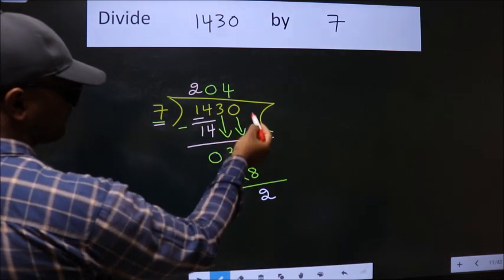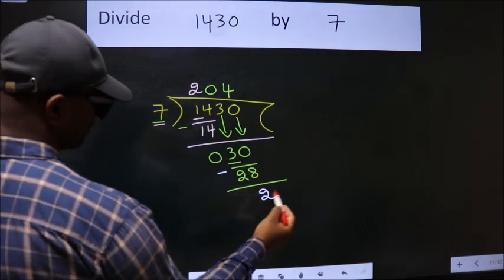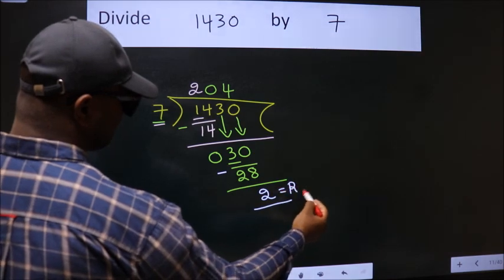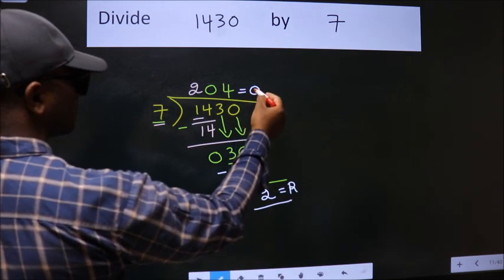No more numbers to bring it down. So we stop here. This is our remainder. This is our quotient.